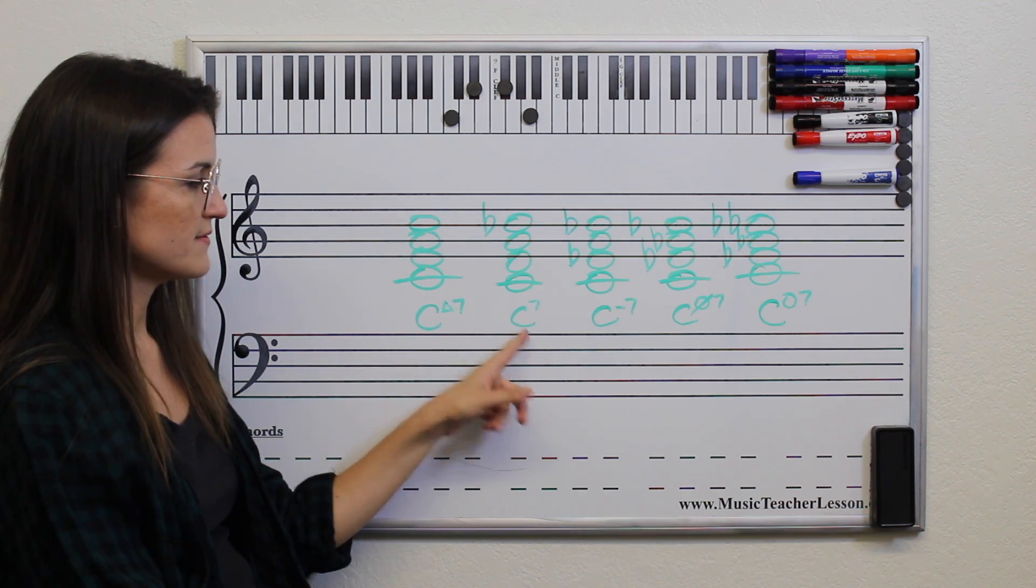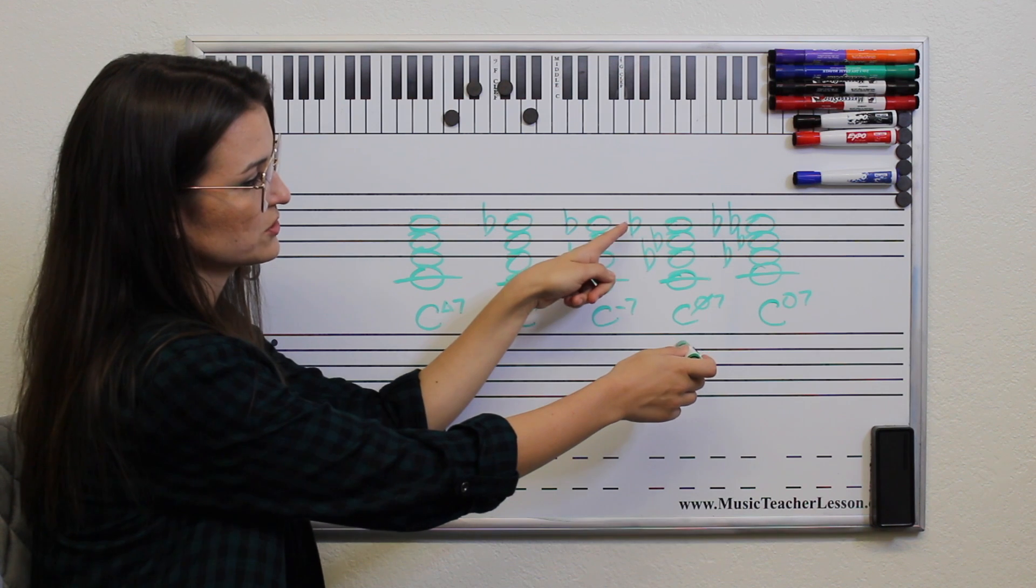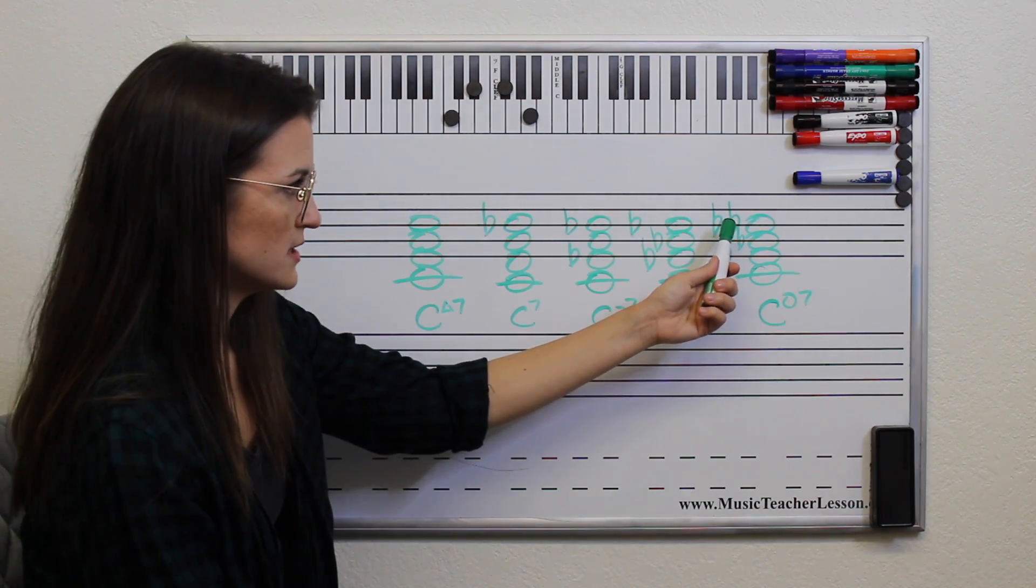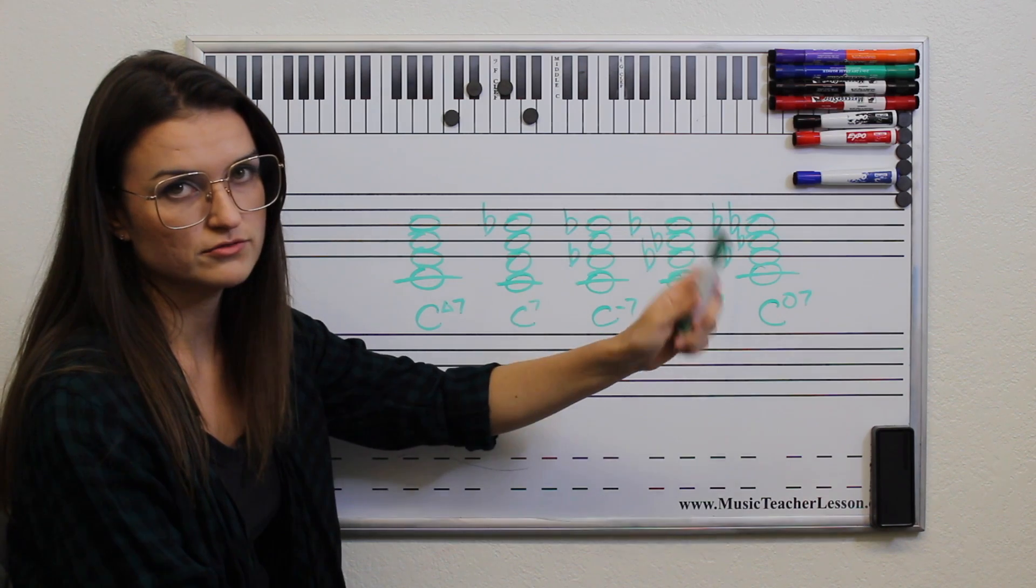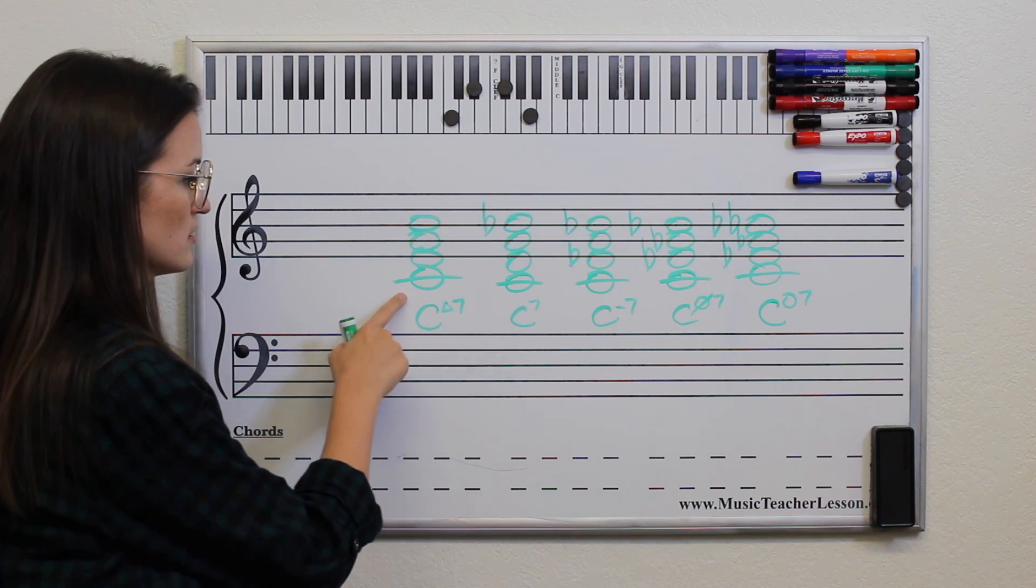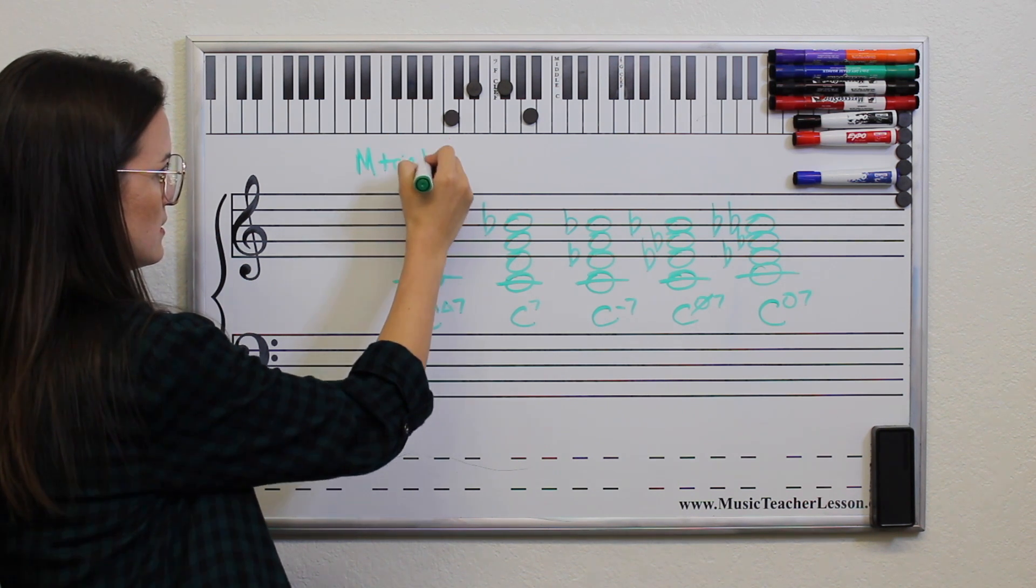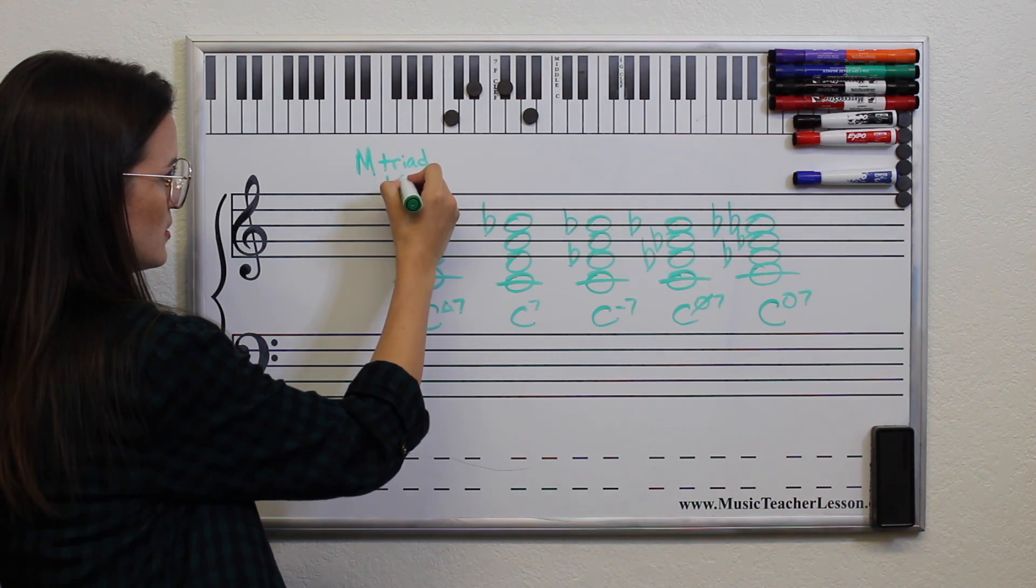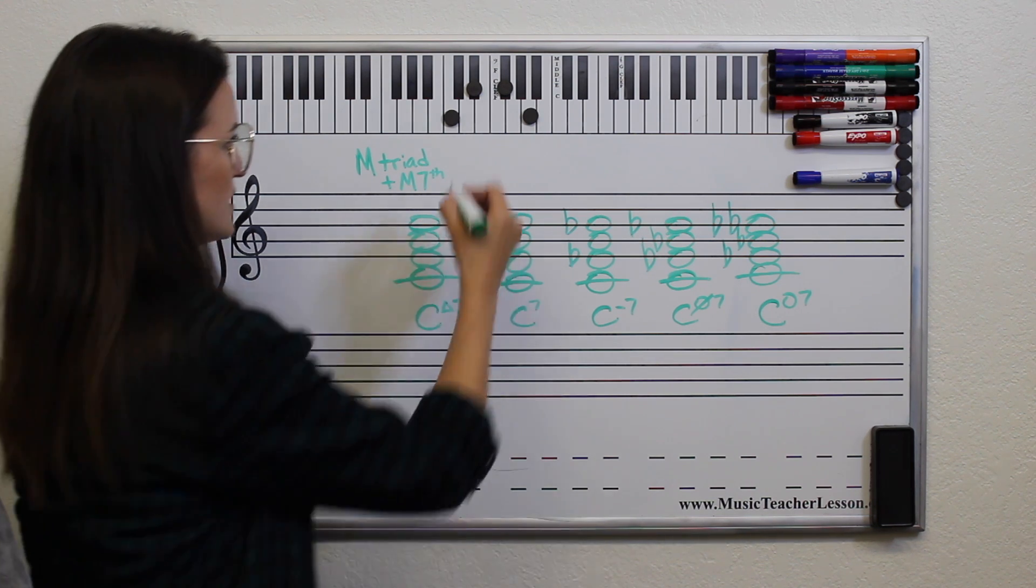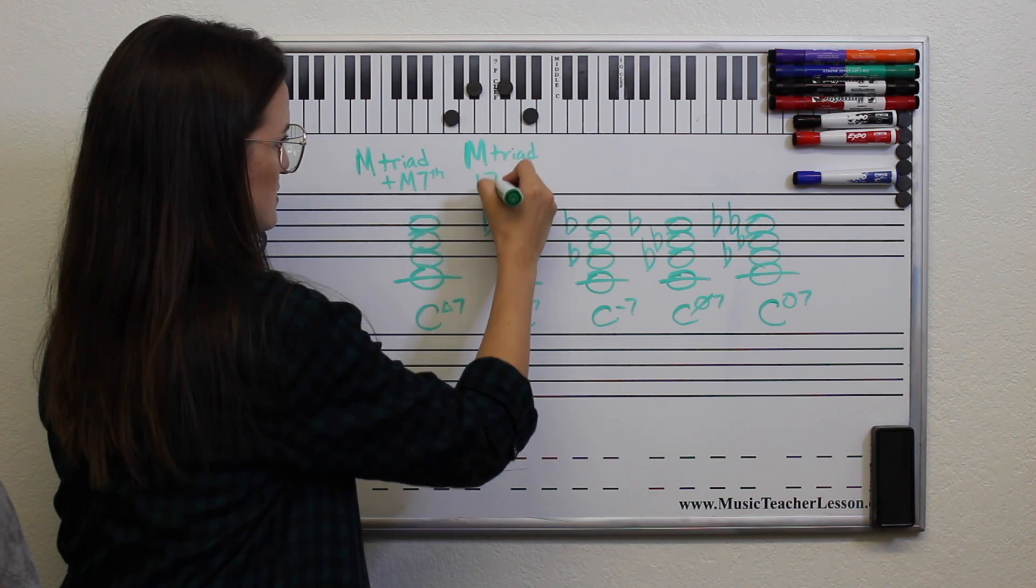You can see in C7 that our 7th is a minor, and it's minor in the minor 7th and the half diminished chord as well. So three of them have a flatted 7th and one of them has a diminished 7th, so double flat. So one of them has a double flat 7th. So C major has a major triad plus major 7th interval.